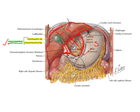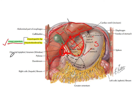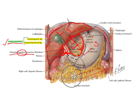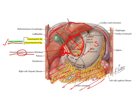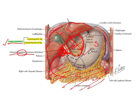Behind the stomach and behind the lesser omentum, you can see the shadow of the cavity — this cavity is known as the lesser sac. The entrance to this cavity is the omental foramen, also known as the epiploic foramen. The peritoneal fluid moves from the greater sac toward the lesser sac through this foramen. The lesser sac is a small cavity located behind the stomach and behind the lesser omentum.